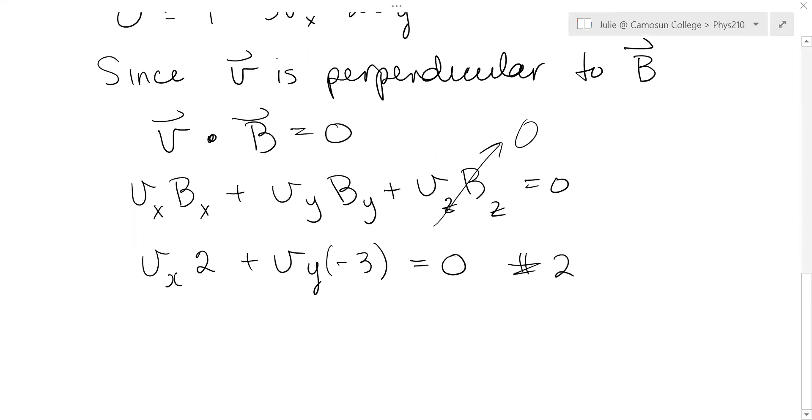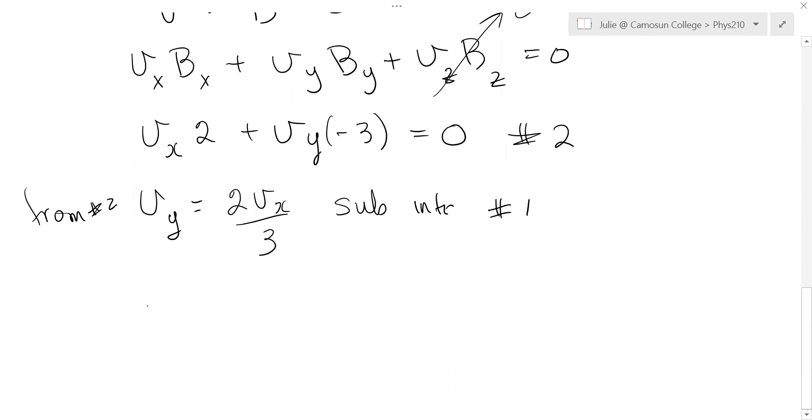So I'll solve equation number two for Vy. Vy would be, so this is from number two, Vy would be two Vx over three. Now I'm going to sub that into equation number one. And equation number one was that four equals three Vx plus two Vy is two Vx over three. So this is three plus four over three Vx.